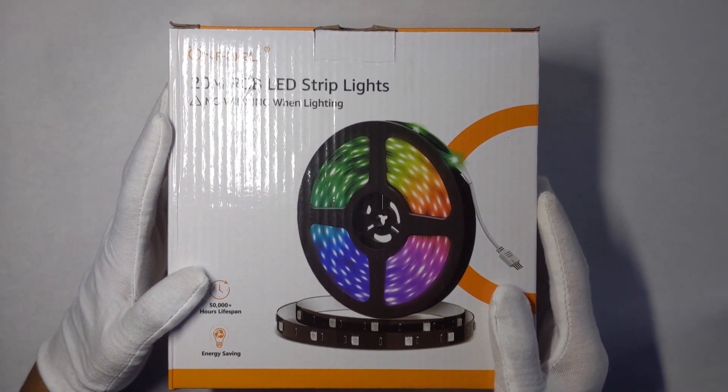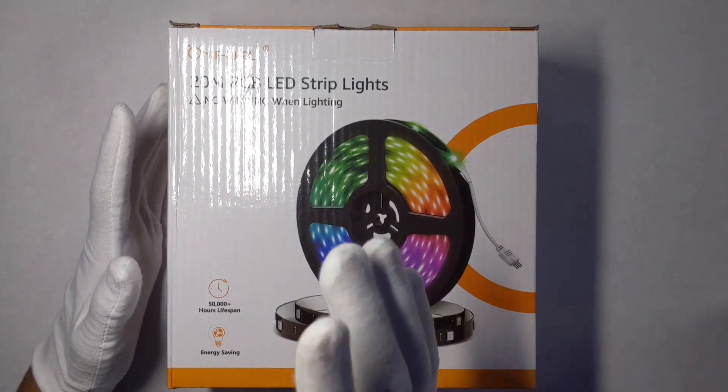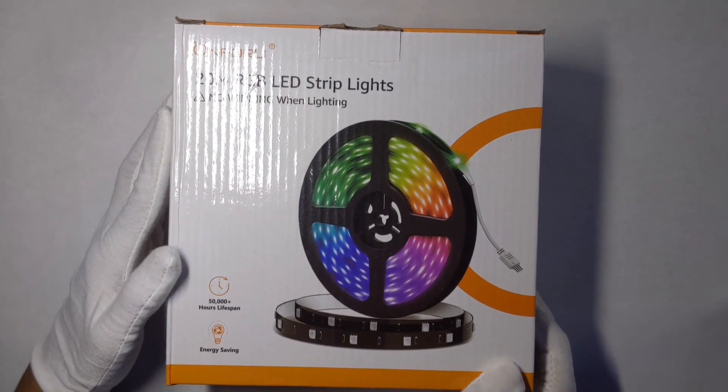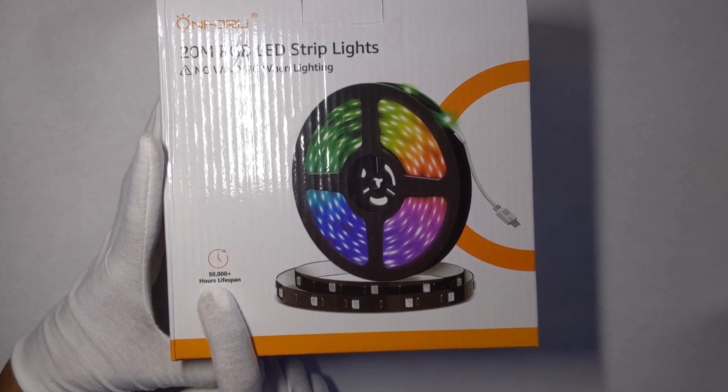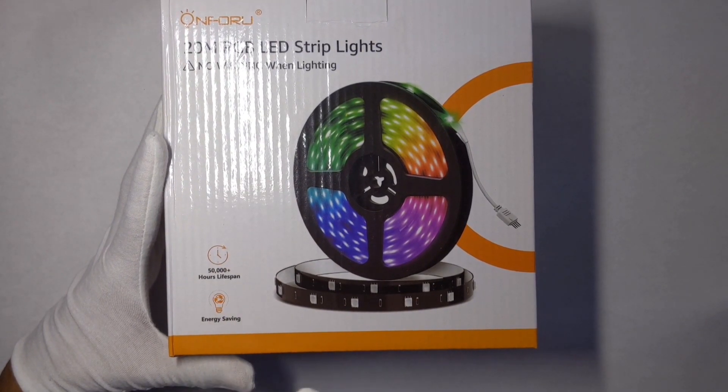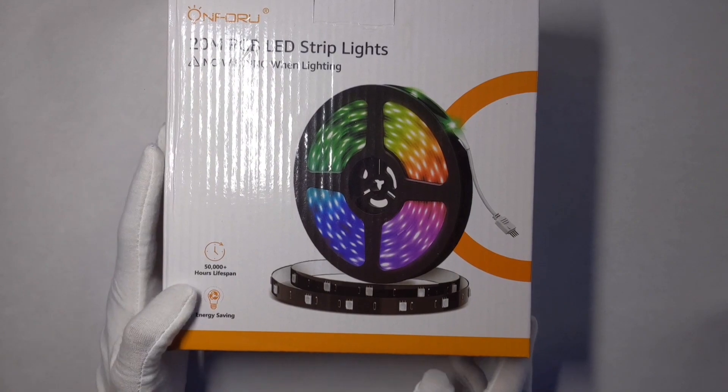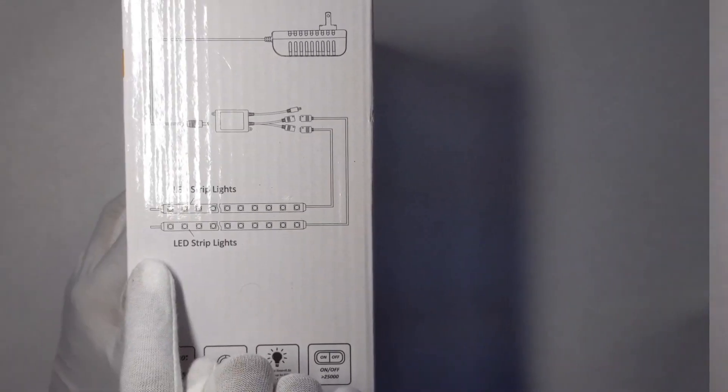Everyone, welcome to my channel. Today's video we're going to be taking a look at the Onforu 20 meter RGB strips. These are 65 feet and they have a 50,000 plus hour lifespan and they're energy saving, which is what LEDs are known for. A little diagram showing how to set them up.